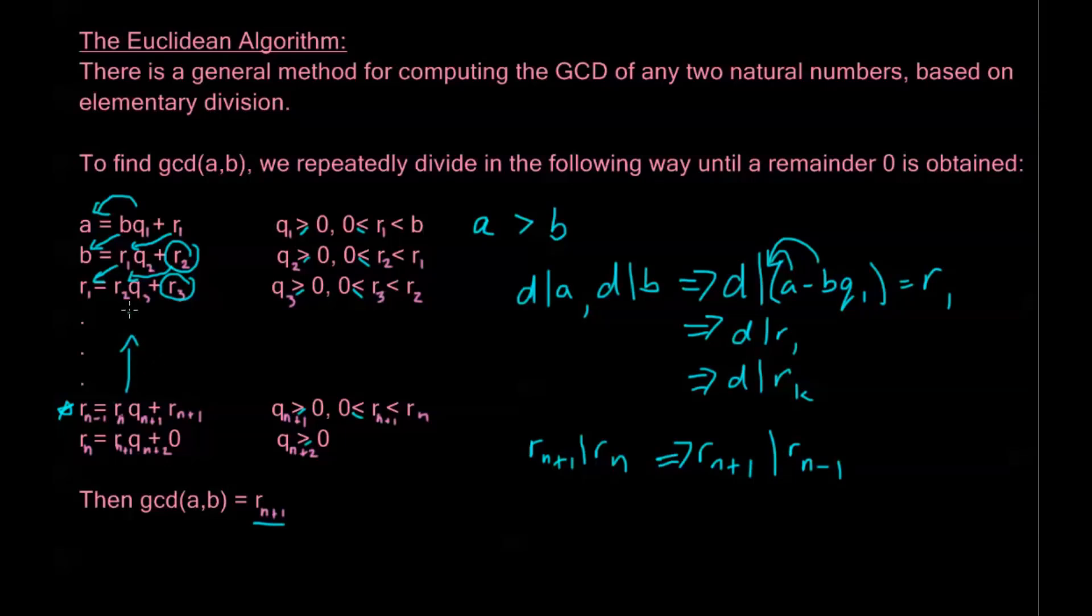It divides everything on the right side, so it must divide the left side as well. And continuing all the way to the top, we're going to be able to get all the way up to R_n+1 divides A, and R_n+1 divides B.